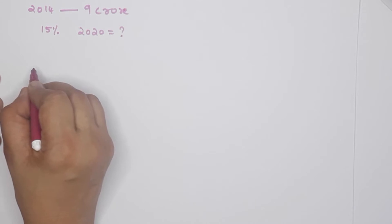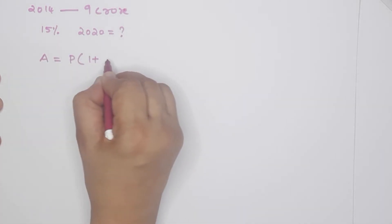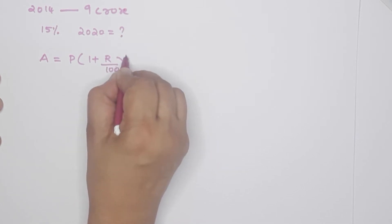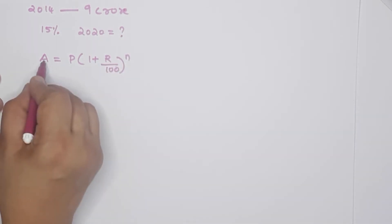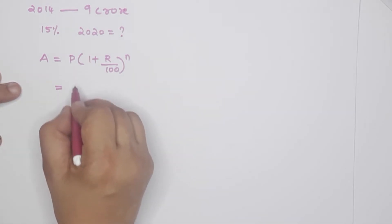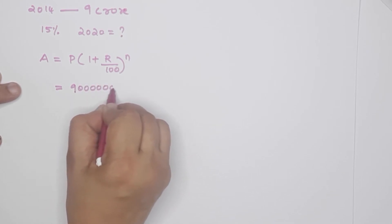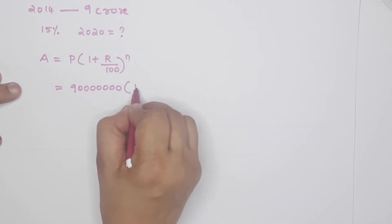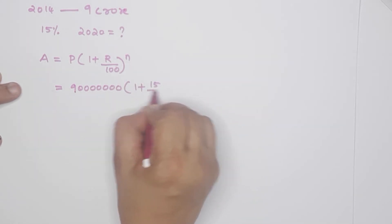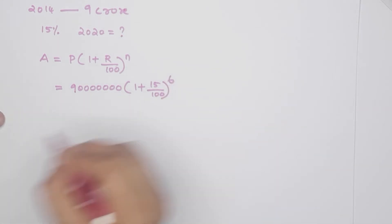What is the formula? A is equal to P into 1 plus R by 100, whole raise to N. P is 9 crores — that means 9 followed by 7 zeros. R is 15. N: from 2014 to 2020, that is 15, 16, 17, 18, 19, 20 — so N is 6.